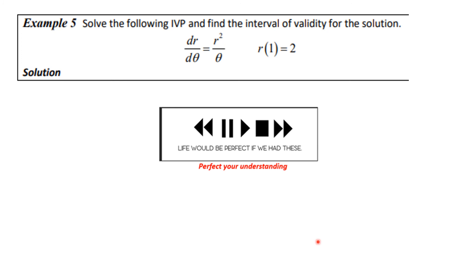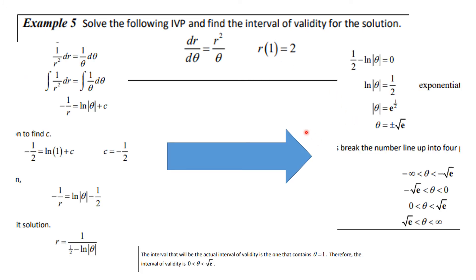One more problem: solve the initial value problem dr/dθ = r²/θ with r(1) = 2. Note the different variables here. We can separate variables: r⁻² dr = (1/θ) dθ. Integrating both sides, the integral of r⁻² gives −1/r, and the integral of 1/θ dθ gives ln|θ| + c. Using the initial condition θ = 1, r = 2, we get c = −1/2. That means −1/r = ln|θ| − 1/2, so r = 1/(1/2 − ln|θ|), which is our solution.